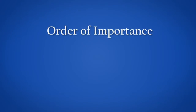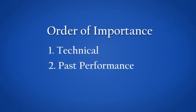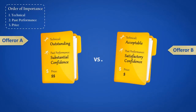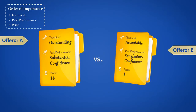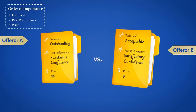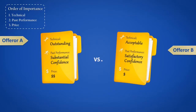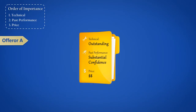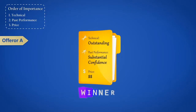What do you mean? Well, suppose your evaluation factors set forth in the solicitation were technical, past performance, and price, in that order of importance. Suppose you were trying to make a selection decision between two offerors. Offeror A's proposal has received an outstanding rating in technical and a substantial confidence rating in past performance. Offeror B's proposal has received an acceptable rating in technical and a satisfactory confidence rating in past performance. However, Offeror A's proposed price is 20% higher than that of Offeror B. Because you are using a trade-off basis for award, and the solicitation has stated that price has the least relative importance of the three evaluation factors, you do have the discretion, as the SSA, to decide that Offeror A's proposal represents the best value to the government, even though its proposal has a higher evaluated price.